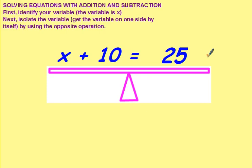So x plus 10 equals 25. In this case, we want x, the variable, to be by itself. We want to get rid of this plus 10, so we need to do the opposite operation.